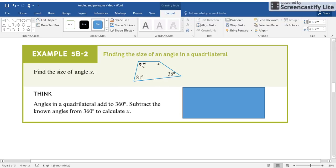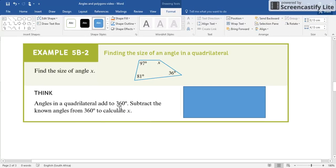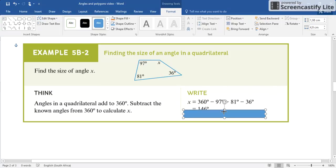I would add up the ones you've got, get an answer, and subtract it from 360, and that will give you X. In this particular one, they subtracted 97, subtracted 81, subtracted 36, and they got 146.